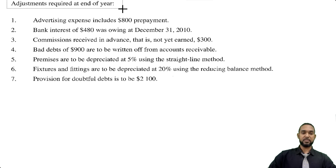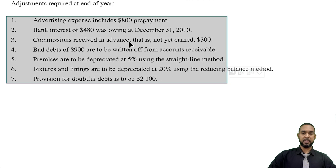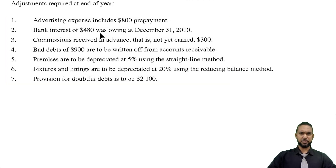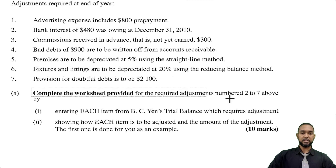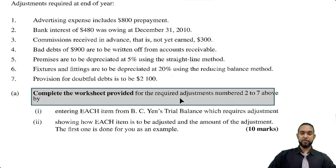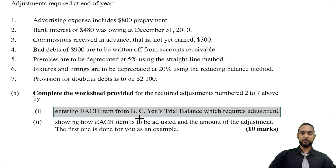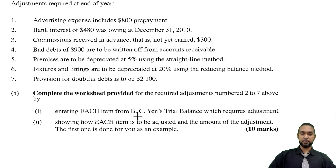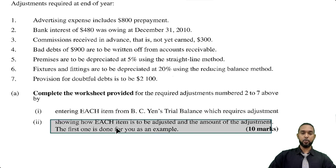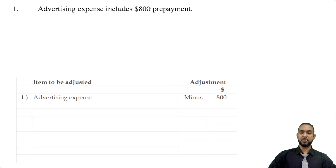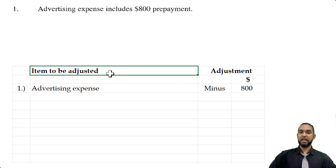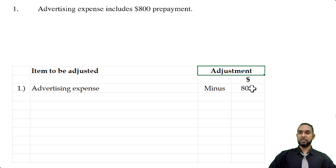Down here we have some adjustments required for the year. The question asks us to complete a worksheet for the required adjustments, numbers two to seven, by entering each item from BCN's trial balance which requires adjustment and showing how each item is to be adjusted and the amount of the adjustment. The first one is done for you as an example. Let's pull up the adjustments and the little table — we're seeing item to be adjusted, adjustment, and some other columns.